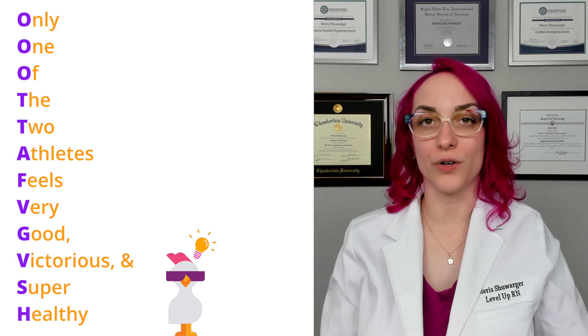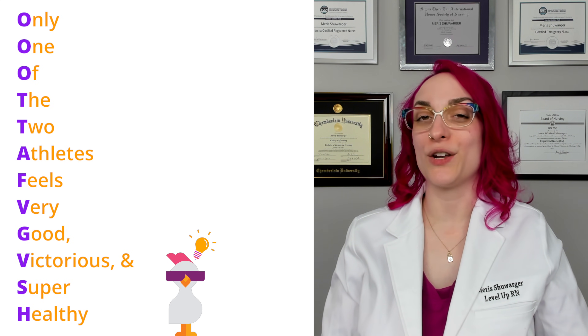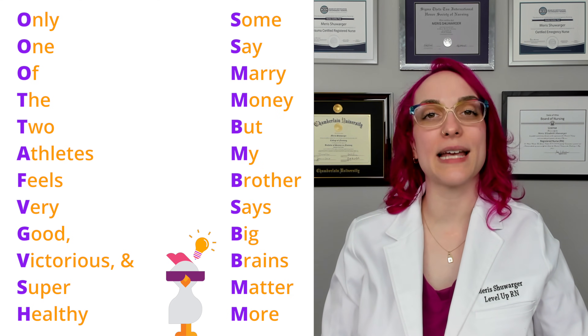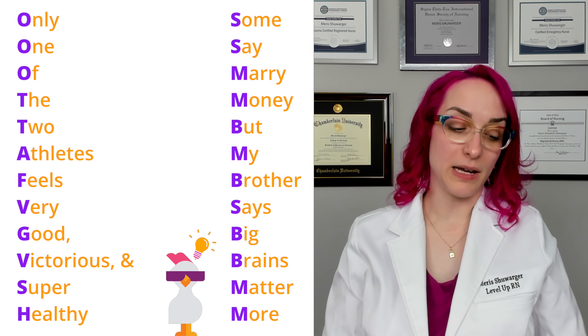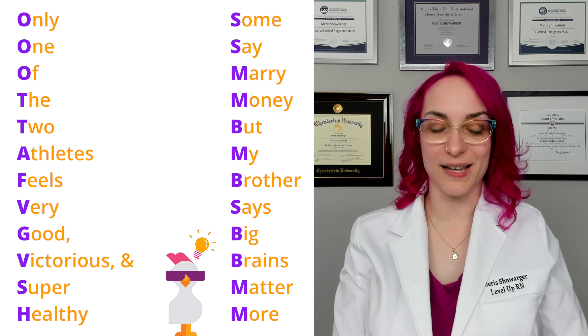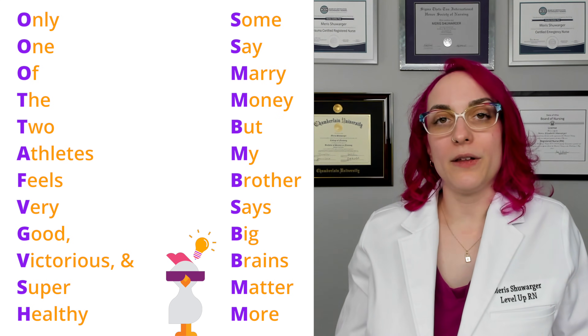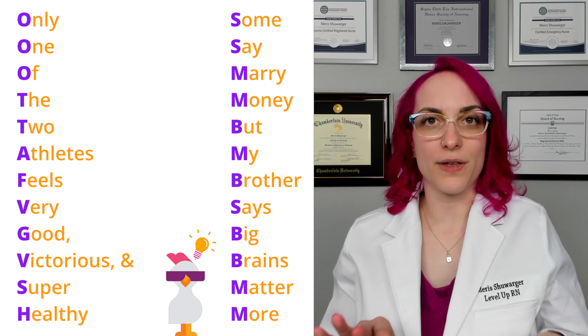To remember the type of each cranial nerve — sensory, motor, or both — we use the mnemonic: 'Some say merry money, but my brother says big brains matter more.' That gives you sensory, sensory, motor, motor, both, motor, both, sensory, both, both, motor, motor. If your program allows scratch paper, write down the first letters of both mnemonics before your exam so you can quickly identify the name and type of each nerve.